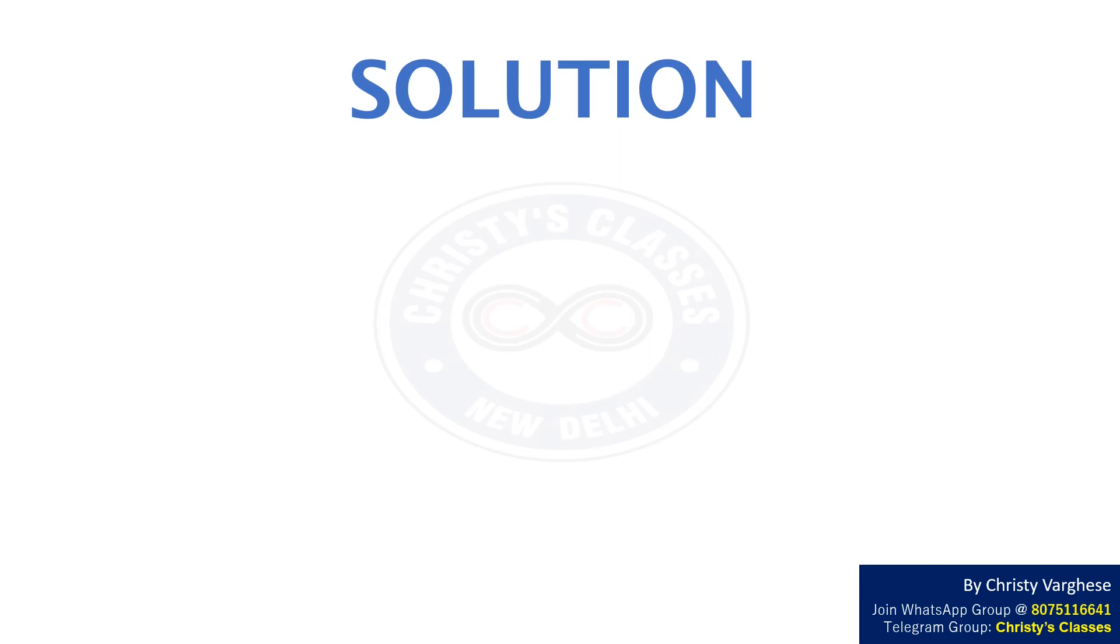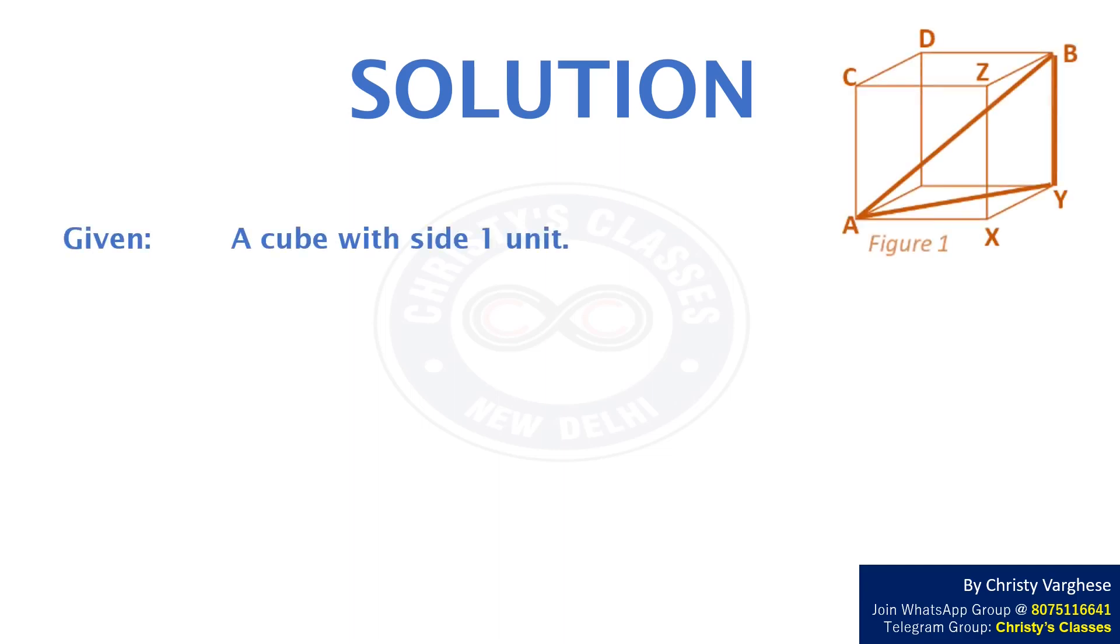Solution. Given a cube with side 1 unit, join AB. Mark points C, D, X, Y and Z on the cube as shown in figure 1.